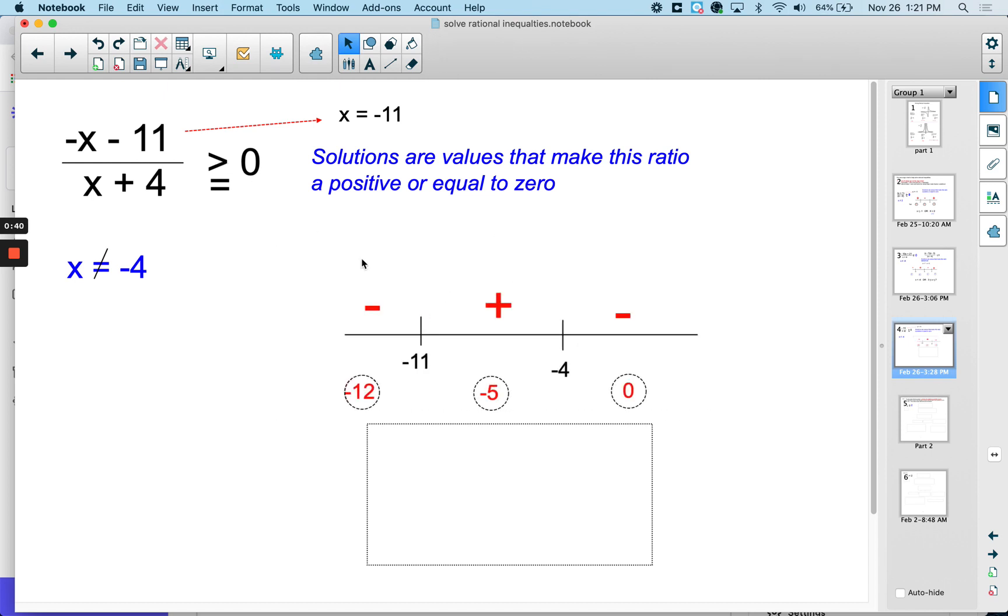So if we set up our sign chart, there's the negative 11, there's the negative 4.